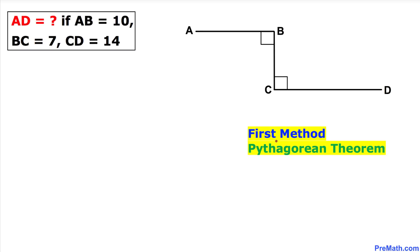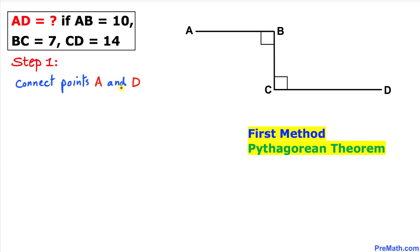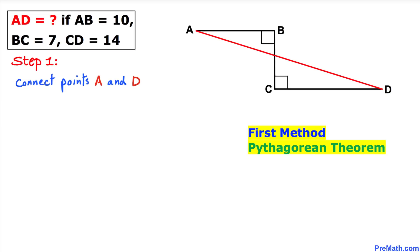The first method we will be using is called the Pythagorean theorem. The very first step is to go ahead and connect points A and D. This is our point A and this is our point D. Let's connect these points, and here is our much nicer looking diagram.